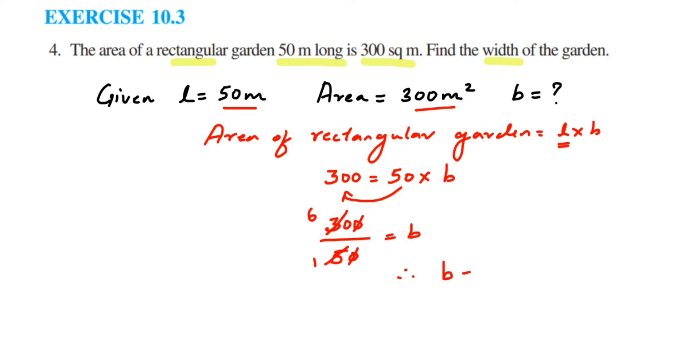And units will be meters. 6 meters. So this is the answer. We got the width of the rectangular garden, which is 6 meters. This was a simple question. I hope it is clear. In case you have any questions or doubts, you can drop a comment.